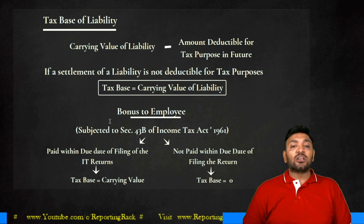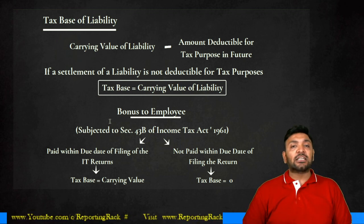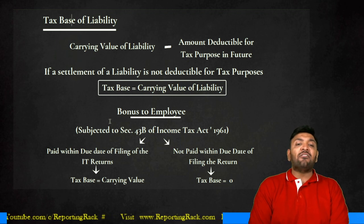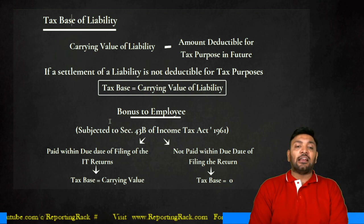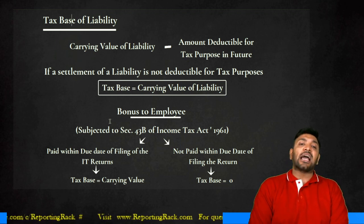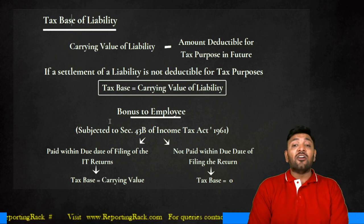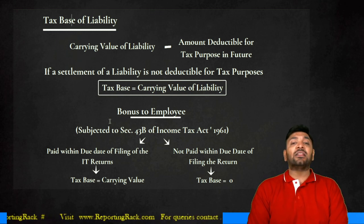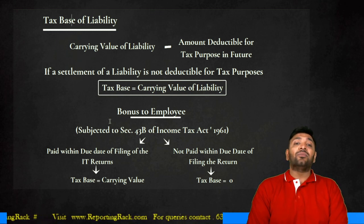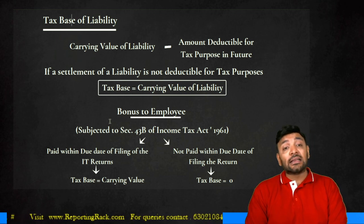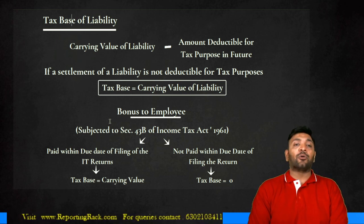Look at the example of bonus subject to Section 43B. If paid within the due date of filing your income tax return, tax base equals carrying value and temporary difference is zero. If not paid within the due date, tax base equals zero and it results in a temporary difference.